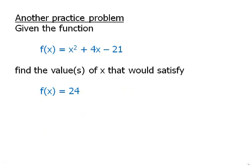Another practice problem. Given the function f of x equals x squared plus 4x minus 21, the same function we had last time, find the values of x that would satisfy the equation f of x equals 24. In other words, what inputs would give us an output of 24? Pause the video and work on this on your own.